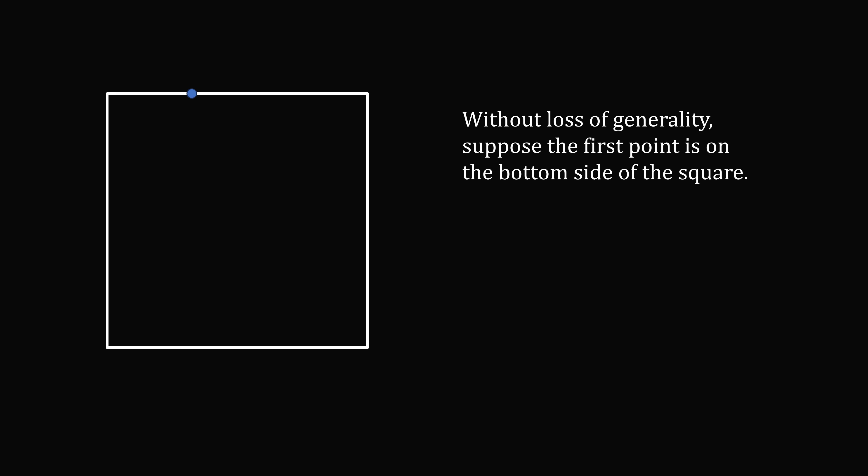So now let's solve the problem analytically. To get started we'll ask the question where could the first point be? It could be on the left side of the square, it could be on the bottom side, it could be on the right side, or it could be on the top side. Now we can take advantage of a symmetry of the square. All four of these cases are equally likely. Without loss of generality, we can suppose the first point is on the bottom side of the square. You can imagine after the first point is picked we can rotate the entire square to force it to be on the bottom side.